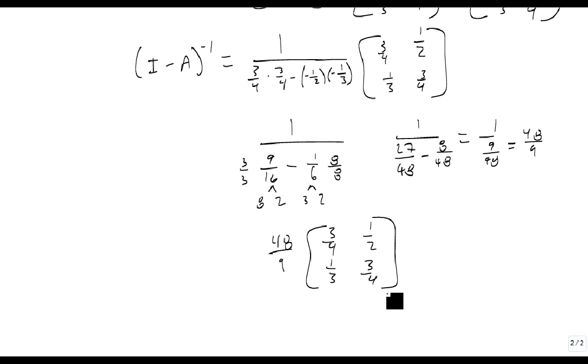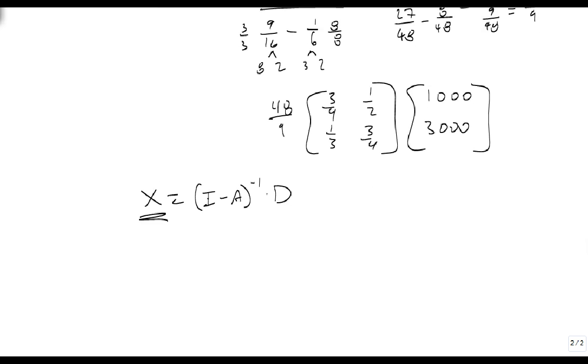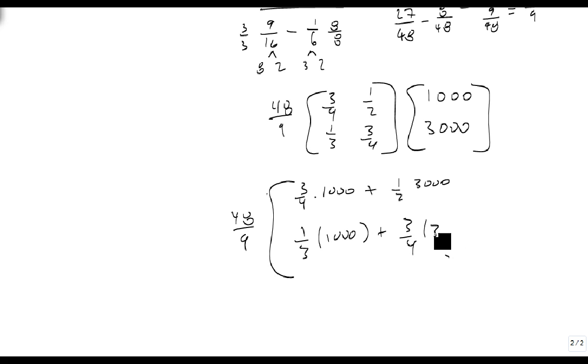So since x is equal to, based on our earlier conversation, (I minus A) inverse times D, all I have to do is multiply this by my 1,000, 3,000, and it'll tell me what my production is. So, we start by doing 3/4 times 1,000, plus 1/2 times 3,000. We've still got our 48 over 9 floating out here. Then we do 1/3 times 1,000, plus 3/4 times 3,000.